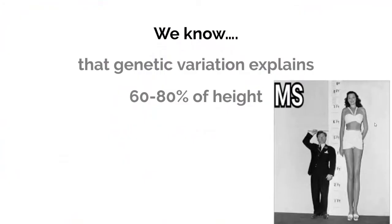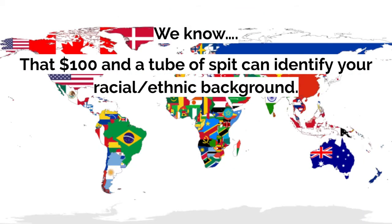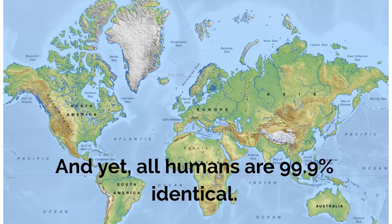We know that genetic variation explains 60% to 80% of height variability. We know that women with a mutation in BRCA1 and BRCA2 have an 85% lifetime risk of breast cancer compared to 12% in the general population. And we know that with just $100 and a tube of spit, we can identify your racial and ethnic background. And yet, all humans are 99.9% identical.